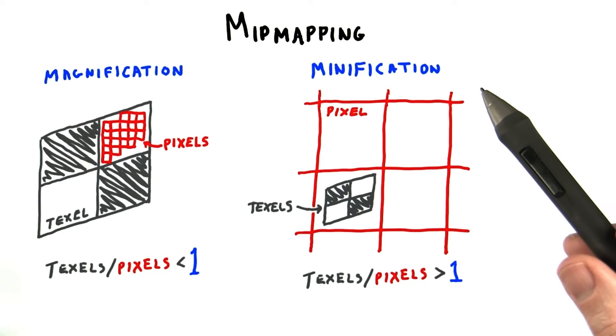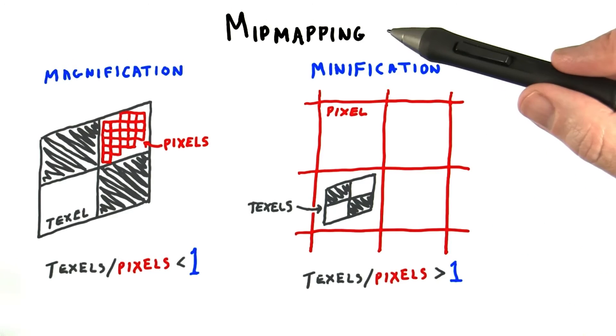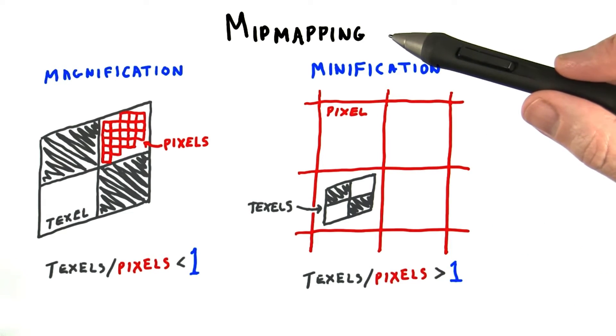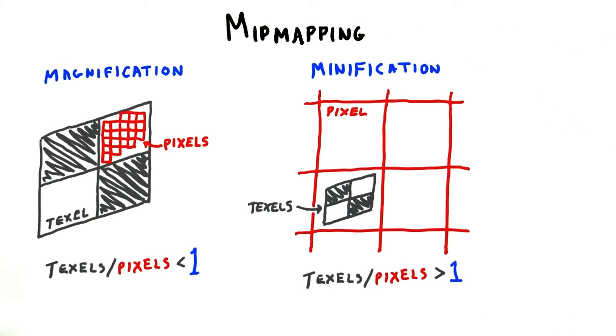With minification, we'd like each pixel to cover no more than one texel. The GPU has built into it special functionality that implements an algorithm called mipmapping. With mipmapping, the GPU computes approximately what the texel to pixel ratio is.